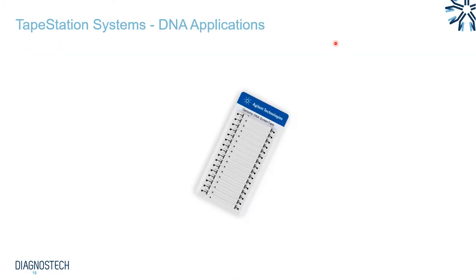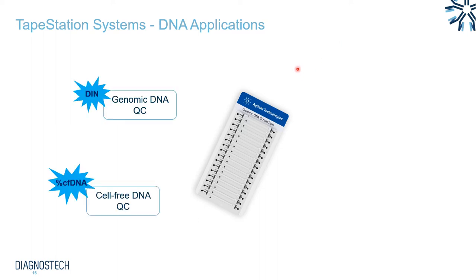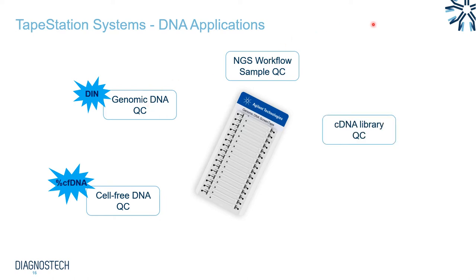Looking now at some of the more specific DNA applications commonly run on the TapeStation: there are two sample-specific assay kits — the Cell-Free DNA and Genomic DNA kits. Other commonly used applications include NGS sample QC, cDNA library QC, and analysis of qPCR or PCR products.